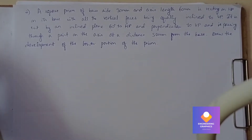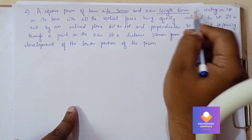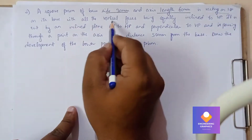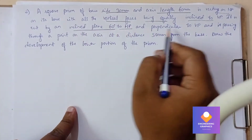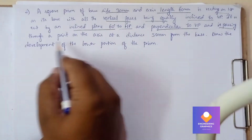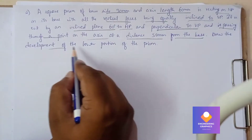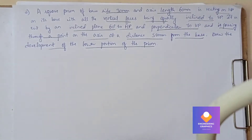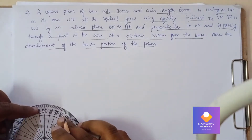A square prism of base height 30mm and axis length 60mm is resting on HP on its base with all vertical faces equally inclined to VP. We need to construct a square prism of dimension 30mm with respect to corner position. The cutting plane is inclined at 60 degrees, perpendicular to VP, and is passing at a distance of 50mm from the base.